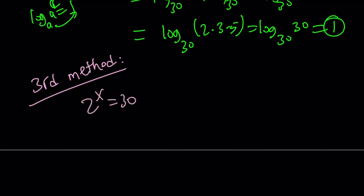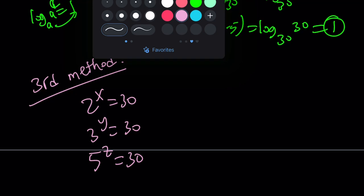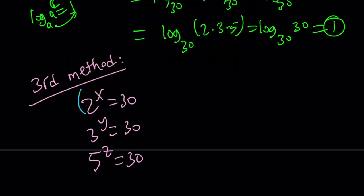So the third method is going to be the following. 2 to the x is 30, and then 3 to the y is 30, and 5 to the z is 30. Let's take the first one. Can I raise both sides to the power 1 over x? And of course, provided that x does not equal 0. And you probably know x does not equal 0 because 2 to the power 0 equals 1. That doesn't equal 30.